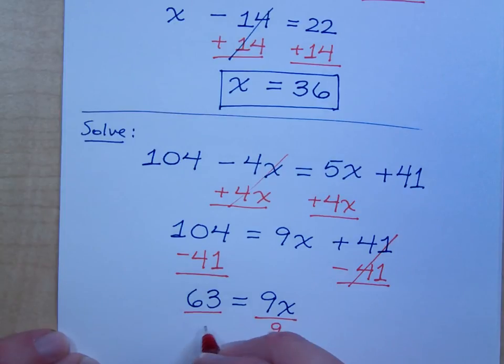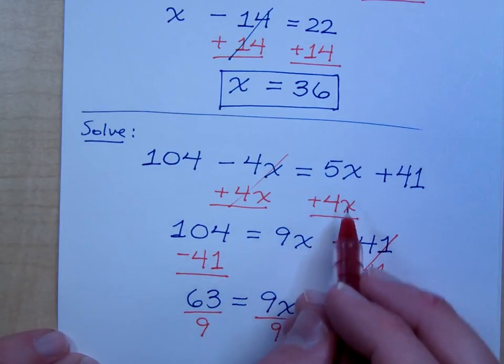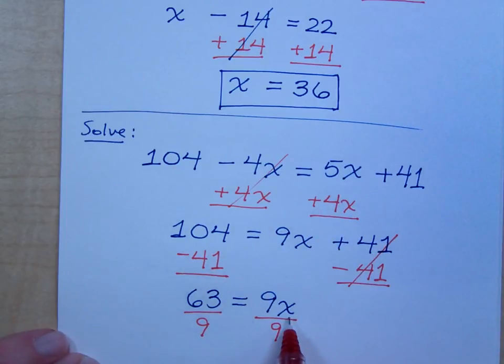See, we save this step of division for the very, very end. Don't try to do it up here. It won't make any sense. At the very end, once I know that 9x is equal to 63, I want you to know how much is 1x, and 1x is equal to how much?